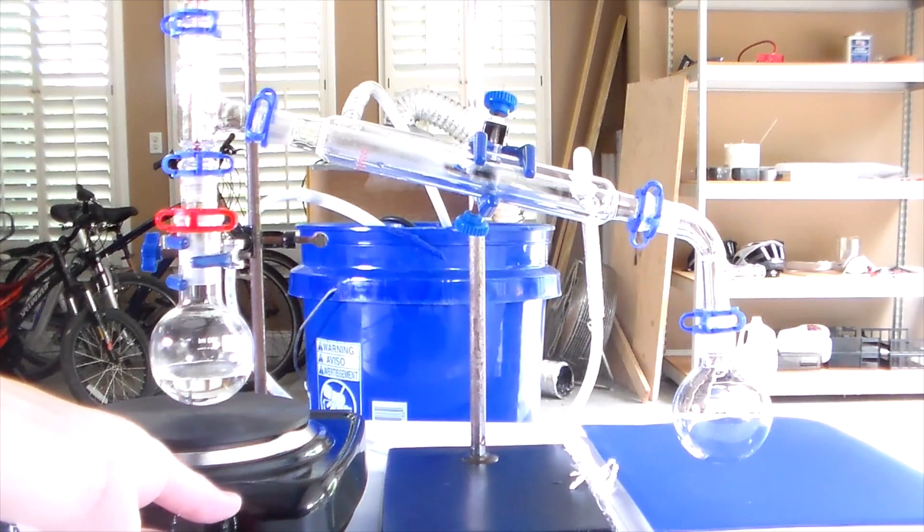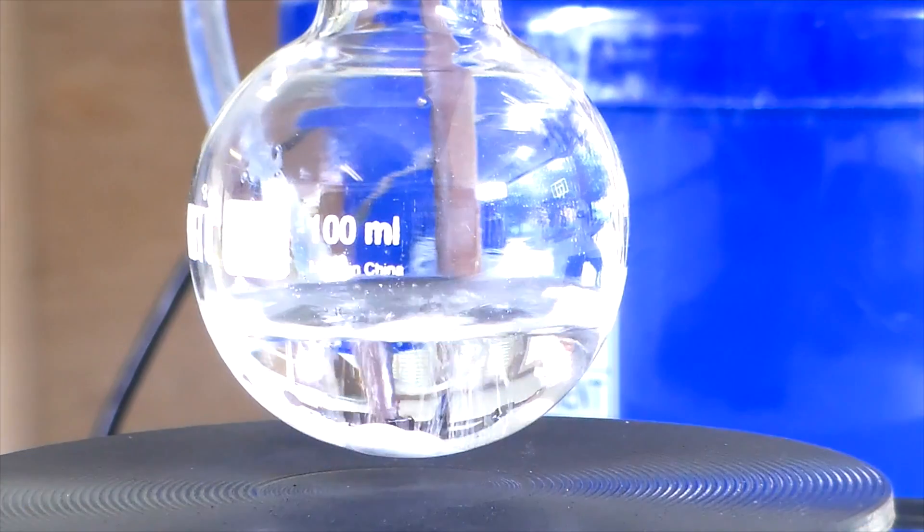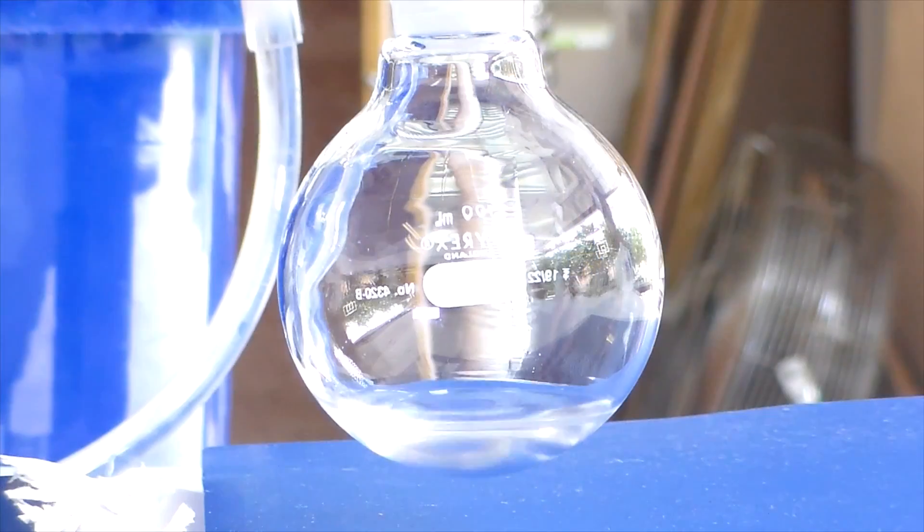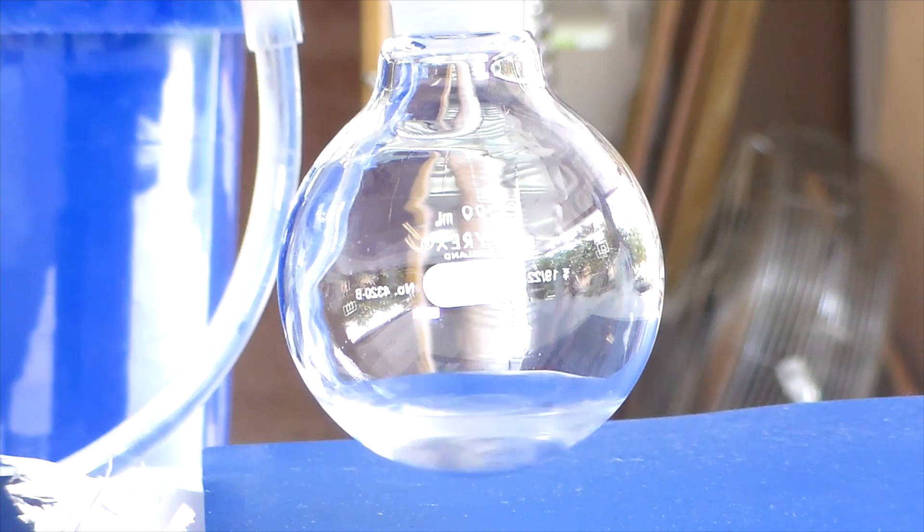Anyway, now set up a simple distillation apparatus and distill off the product. The tert-butyl chloride will be the first fraction to come over, boiling at 49 to 52 degrees Celsius.